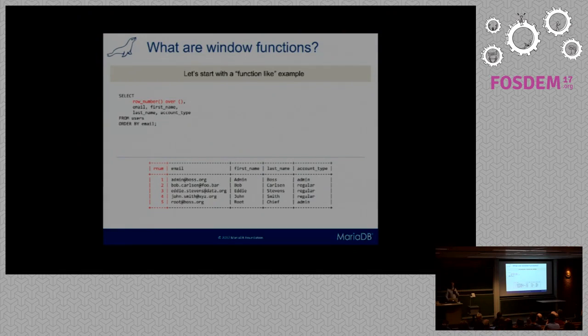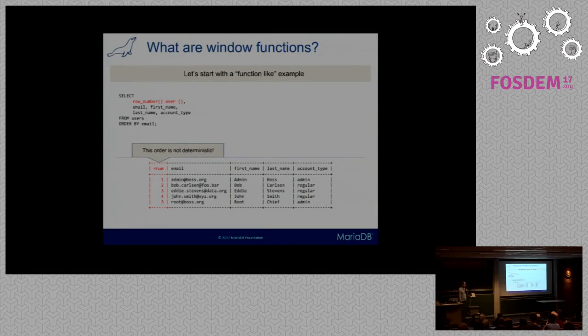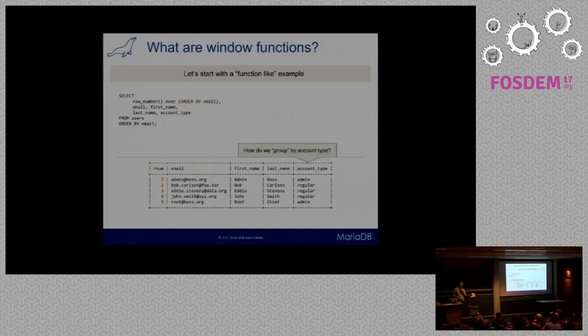The problem here is that we have not defined an order for this window function. The order here that you see 1, 2, 3, 4, 5 is not deterministic. The reason why this is, is that window functions are computed after everything else except the order clause. So the window function can get these rows in any order unless we specify differently. That comes as the form of a parameter for the OVER clause. We tell them that the window function should receive the rows in this order, alphabetically by email.